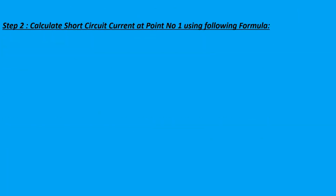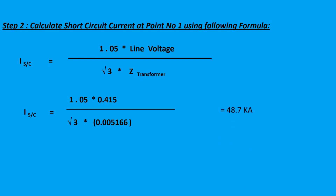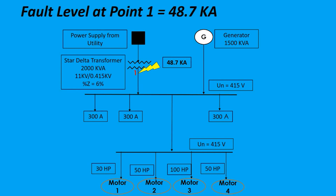Step two: calculate the short circuit current at point number one using the formula — short circuit current equals 1.05 times the line voltage, divided by root 3 times Z transformer. Therefore, ISC equals 1.05 times 0.415, all divided by root 3 times 0.005166, so ISC equals 48.7 kilo amperes. The fault level at point one is 48.7 kilo amperes.